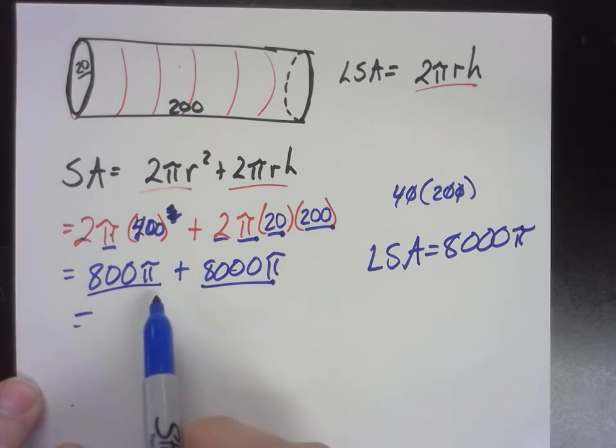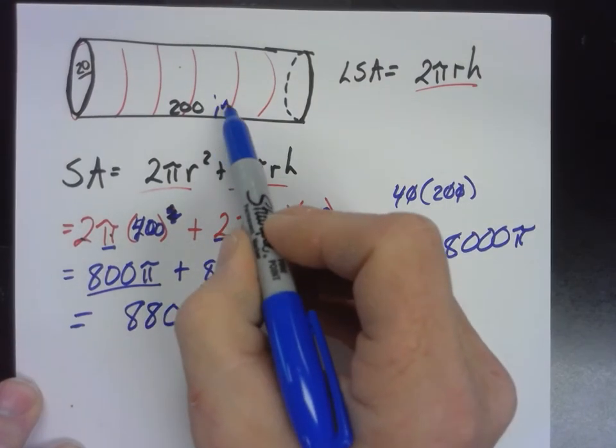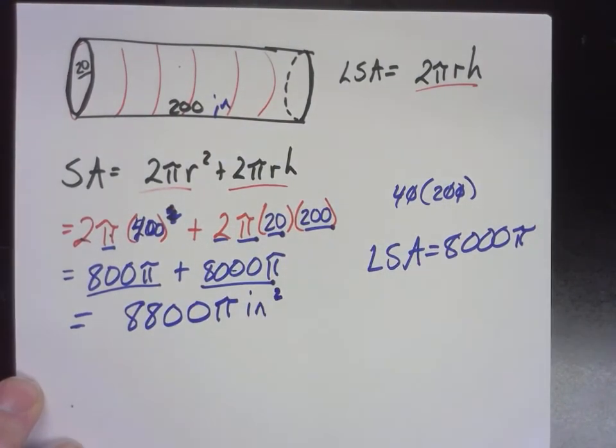If we add them together, and they are like terms, aren't they? So, we can add them together. 8,800 times pi. This was in inches again. So, square inches. That's the total surface area. So, you know how to find the surface area of those three objects. You know the difference between surface area and lateral surface area. You're good to go.